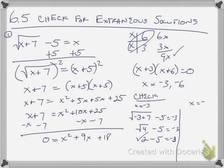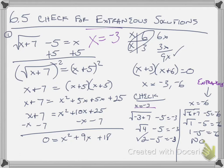When I check negative 6, I get the square root of negative 6 plus 7, then minus 5 is equal to negative 6. Negative 6 plus 7 is positive 1. The square root of positive 1 becomes 1. 1 minus 5 is equal to negative 6. That's not true. So that one is an extraneous solution. That's not the one I want though. I want the one that is the solution. So my answer is x equals negative 3.